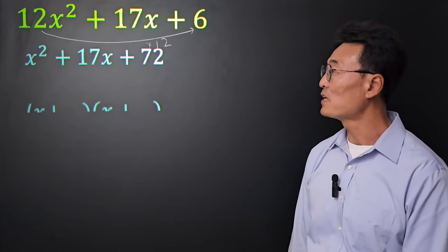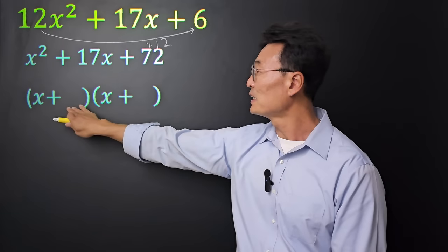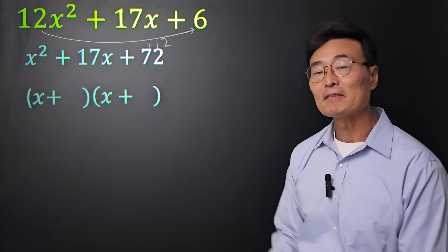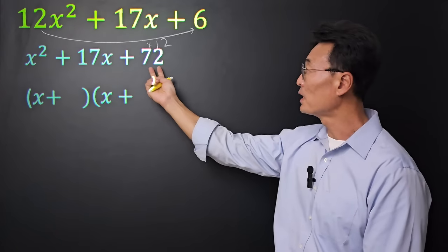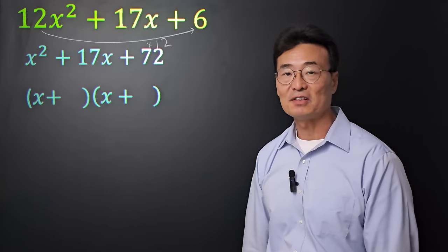Next, we're just going to factor this. To factor this, we have x plus and x plus. And to find out the two numbers that go in here, we need to find two numbers that multiply to 72 and add up to 17.